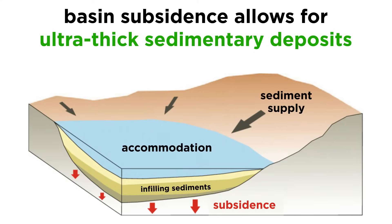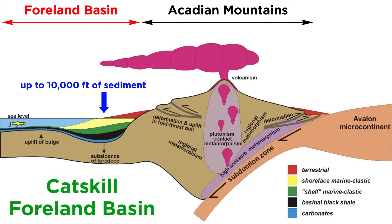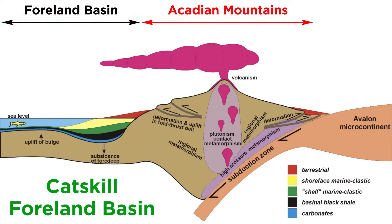Basin subsidence is what makes the formation of ultra-thick sedimentary deposits possible. For example, as much as 10,000 feet of sediment accumulated in the Catskill Foreland Basin over a period of only about 20 million years during the Upper Devonian Period. This sediment was shed from the now-eroded Akkadian Mountains that existed along the eastern seaboard. Subsiding foreland basins like this have fostered deposition of some of the largest sedimentary deformations in the world.